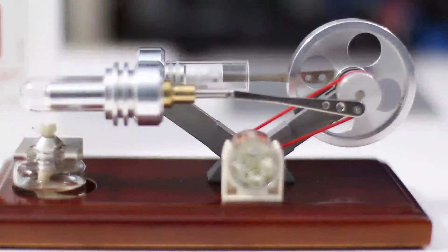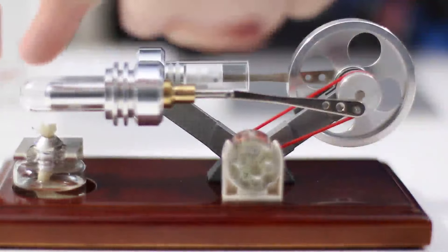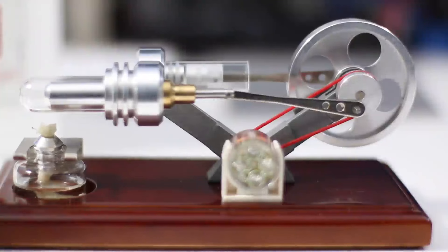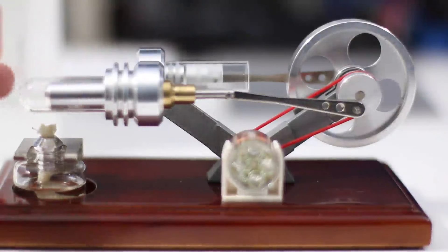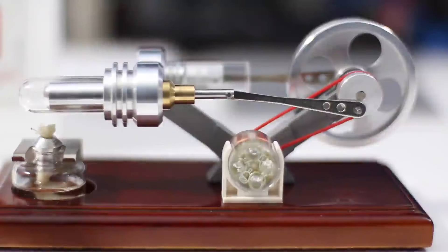And what an external combustion or Sterling engine does is it has heat on the outside, in this case again by the lamp that you see here, and it will produce hot air inside of this glass tube. This is the piston.